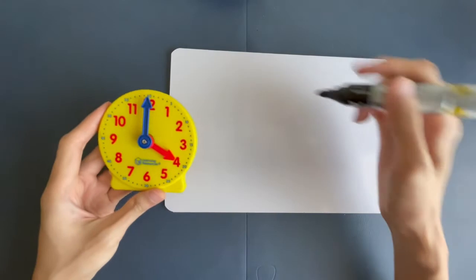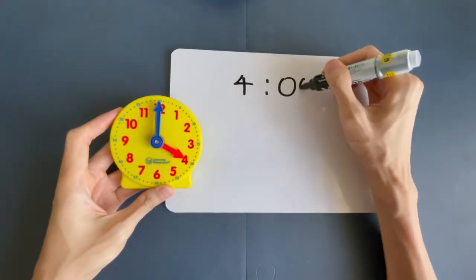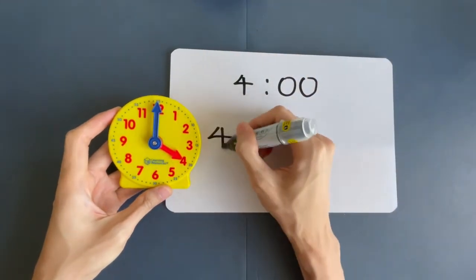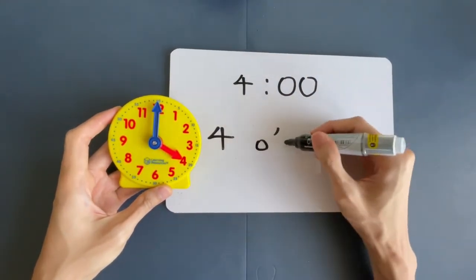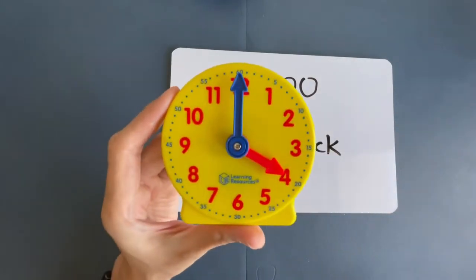So, the time now is 4 o'clock, right? And we write it down this way. How do we spell it? 4 o'clock. 4 o'clock.